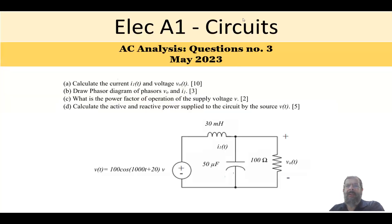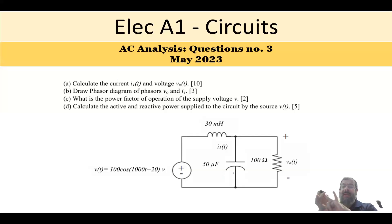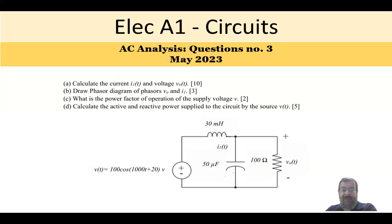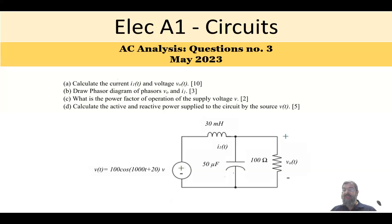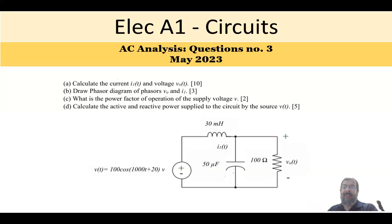Welcome back to the series of Electrical A1 Circuits past exams. This question is about AC analysis. The questions in the A1 exam have three types: DC analysis, AC analysis, and transient. For AC analysis, the input is a sinusoidal function — it could be a sine or a cosine. We don't solve it in the time domain; we go to the frequency domain, or phasors, and then come back to represent values in the time domain.